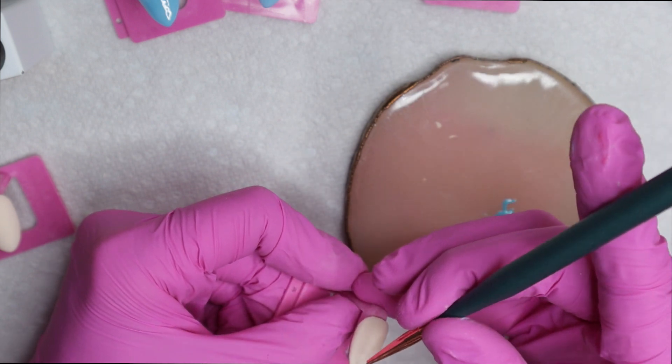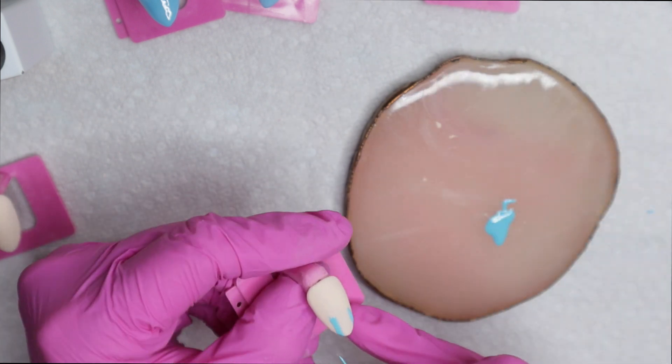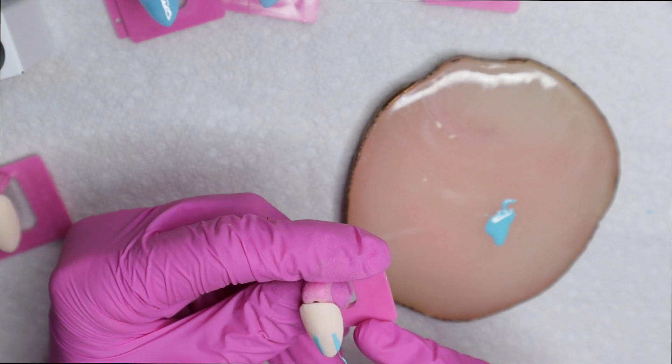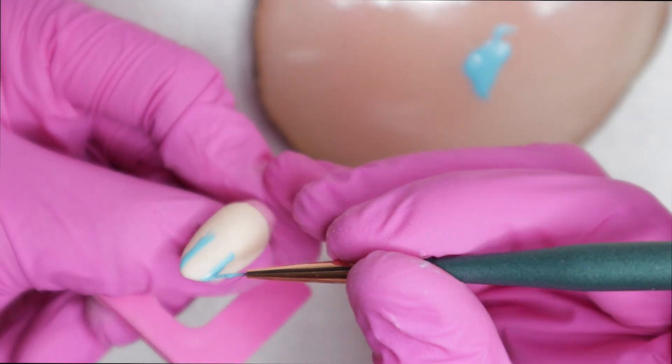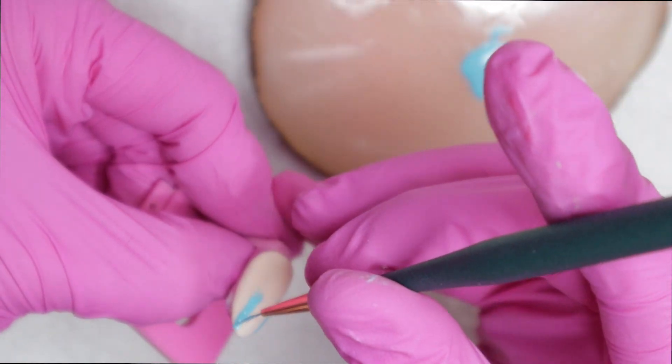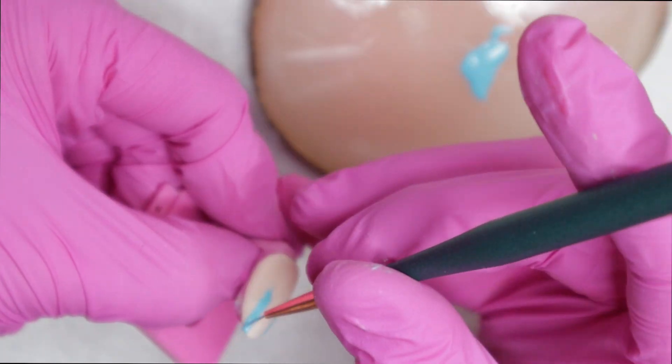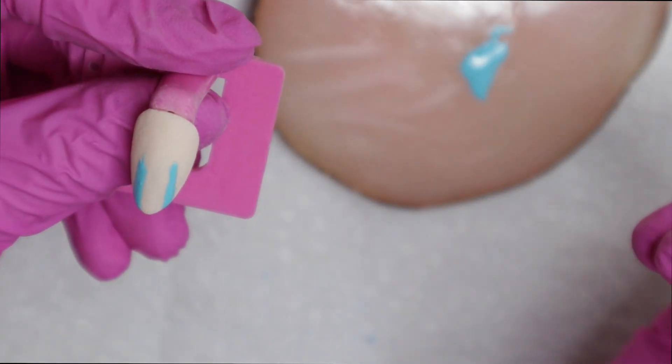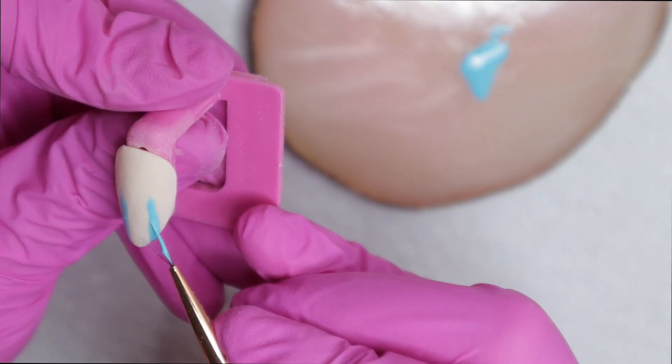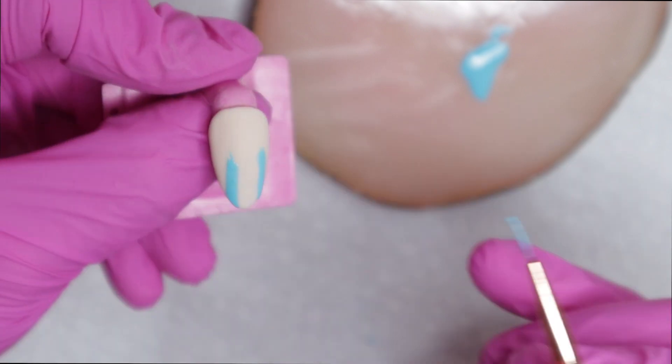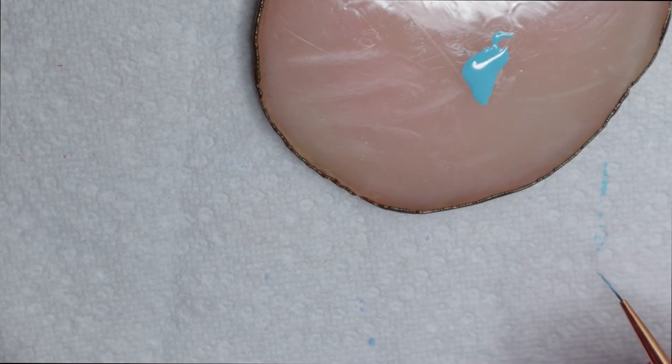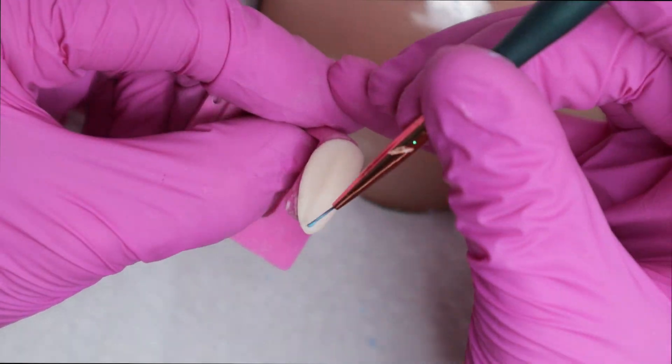So I'm using this liner brush that I got off of Amazon. I forget how many brushes it came with, but it was quite a bit, and they've been working great. So I'm doing my little waterfall style that I really like, and I'm just doing two blue lines on the nail. And I'm trying to make it look like it was paint brushed on, so paint brush strokes. So it has to be pretty imperfect.